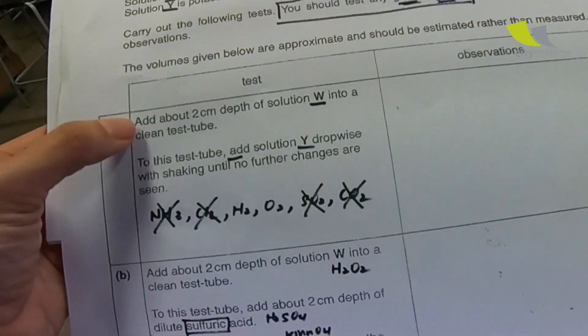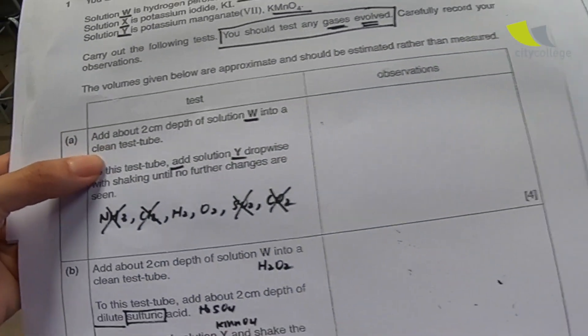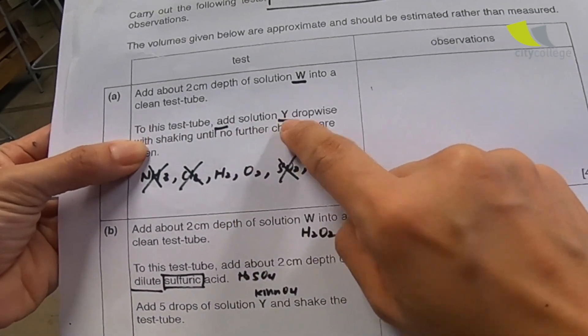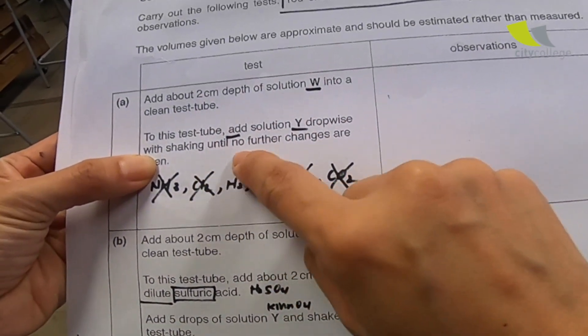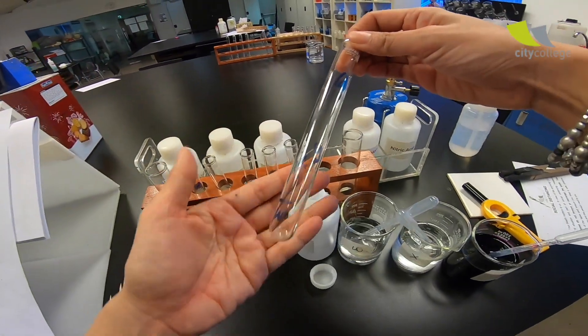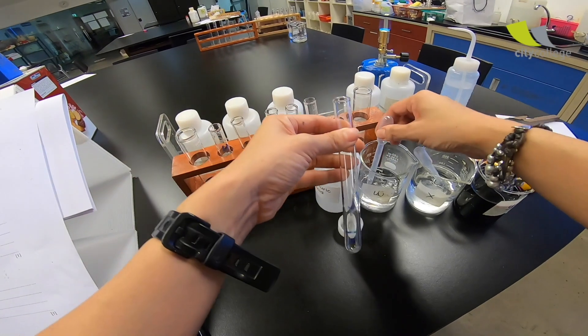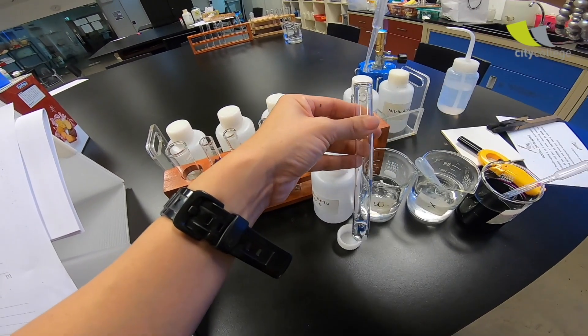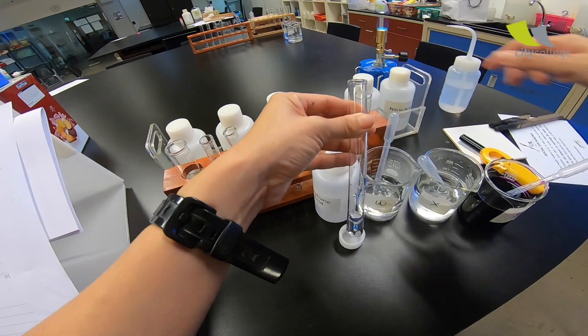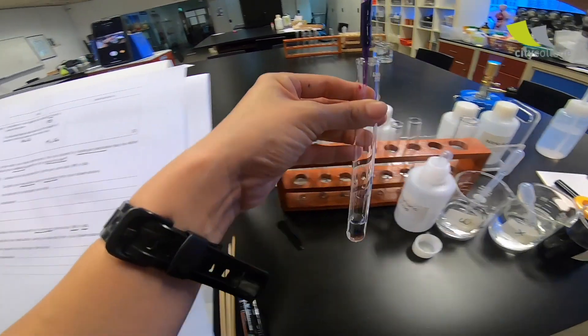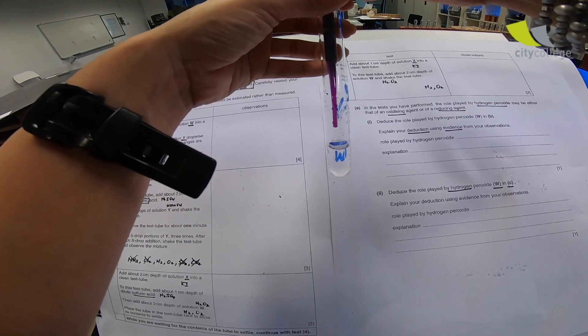Come, let's begin. They say over here, add about 2 cm depth of solution W into a clean test tube. To this test tube, add solution Y dropwise with shaking until no further changes are seen. Part A, add W. This is my Y, dropwise. So let's come to here so that everybody can see. Dropwise, drop by drop.